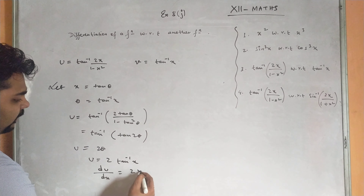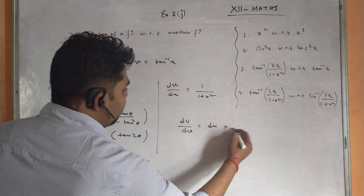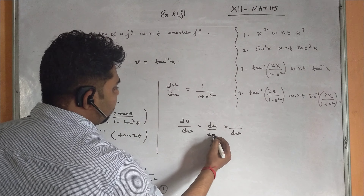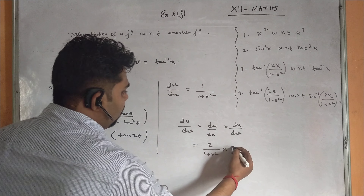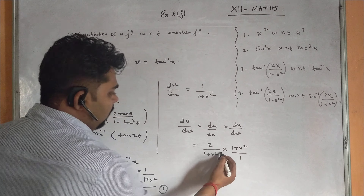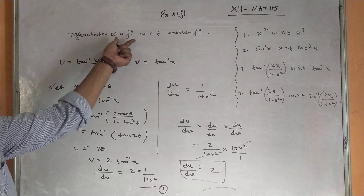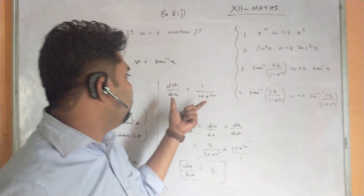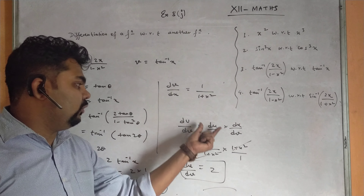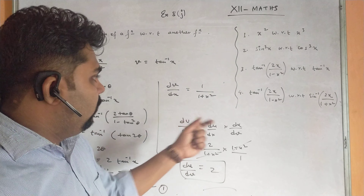For v = tan⁻¹x, dv/dx = 1/(1+x²). To find du/dv: du/dv = (du/dx)·(dx/dv) = [2/(1+x²)] · [(1+x²)/1]. The (1+x²) terms cancel, giving du/dv = 2. This is our final answer.